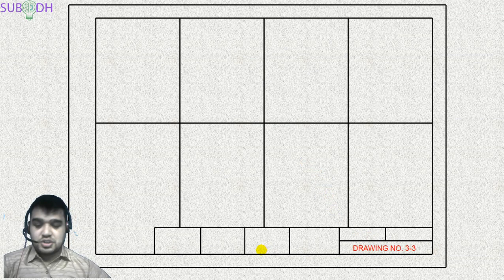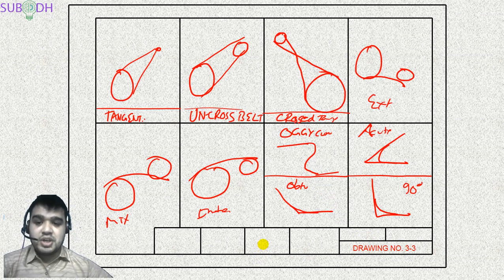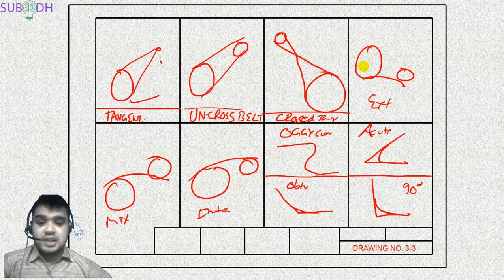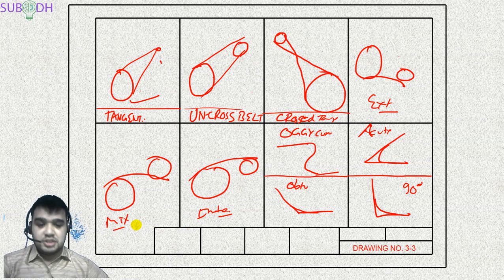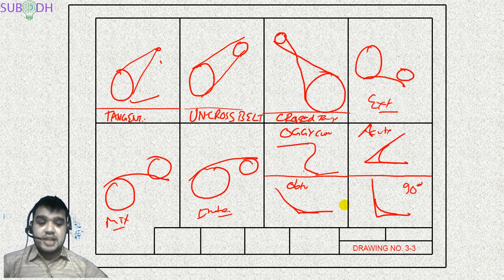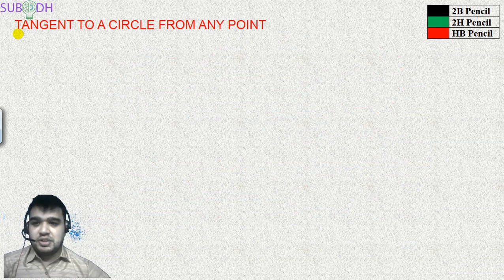Under tangency, we will start with drawing a tangent to a circle from a point, then circle-to-circle tangents. For arcs tangent to circles we will cover exterior type, interior type, and mixed type constructions. We will also draw curves tangent to lines at acute angles, right angles (90 degrees), and obtuse angles.